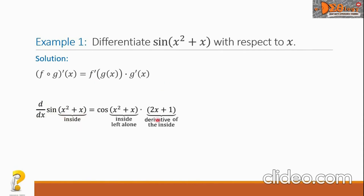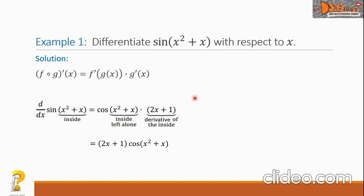Using the pattern here, we write cosine of the quantity x squared plus x — the derivative of sine is cosine, and we copy the inside function as is. Then multiply by the derivative of x squared plus x, which is 2x plus 1. The final answer is the quantity 2x plus 1 times cosine of x squared plus x. Note that 2x plus 1 is a polynomial function, while x squared plus x is the angle for the cosine.